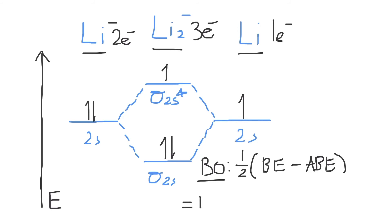For Li2 minus, it will be equal to one half times the number of bonding electrons, of which there's two, minus the number of antibonding electrons, of which there's one. One half times one is equal to one half, which means that there is half of a single bond present in a bond in the Li2 minus ion.